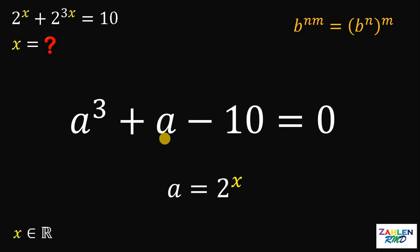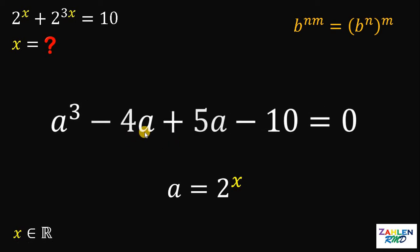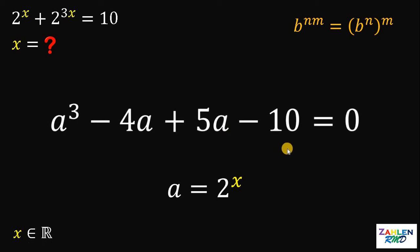One way to factor this is to realize that this a can be written as negative 4a plus 5a. So, negative 4a plus 5a is still a. What is the purpose of breaking a into negative 4a and 5a? Let's see. Let's group the first two terms and let's group the last two terms like this.